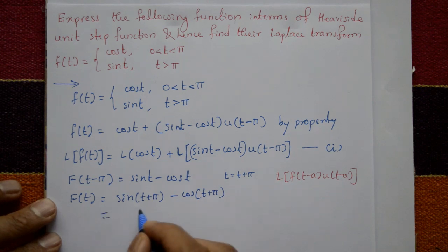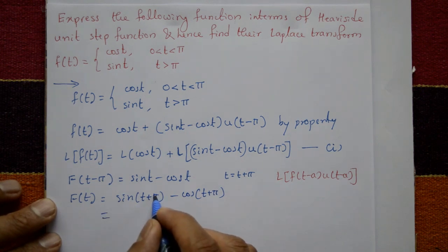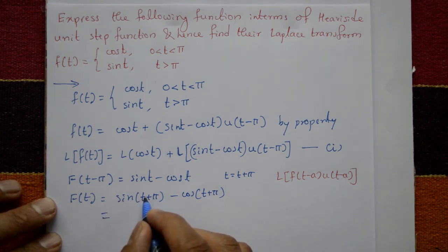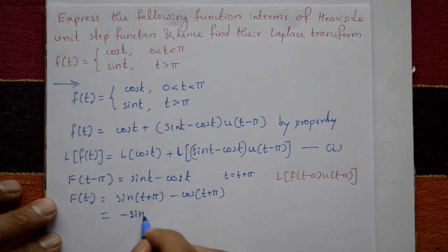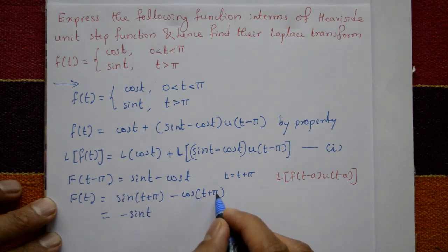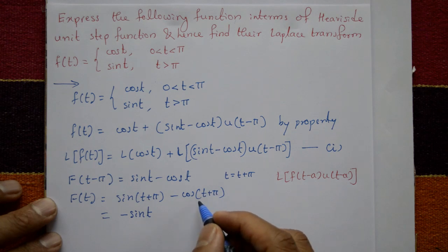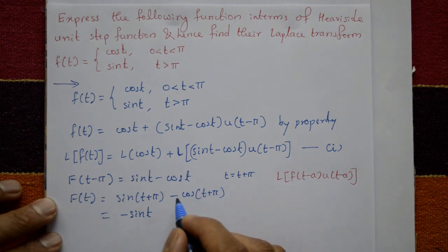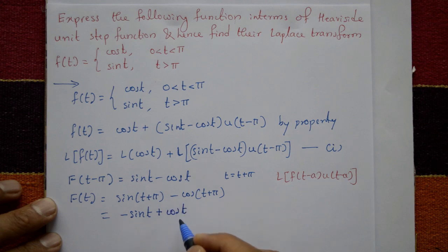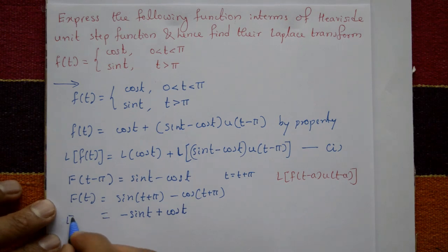Using trigonometric identities: sin(π + t) = −sin(t) and cos(π + t) = −cos(t), so sin(t + π) − cos(t + π) = −sin(t) − (−cos(t)) = cos(t) − sin(t). Applying the Laplace transform on both sides.